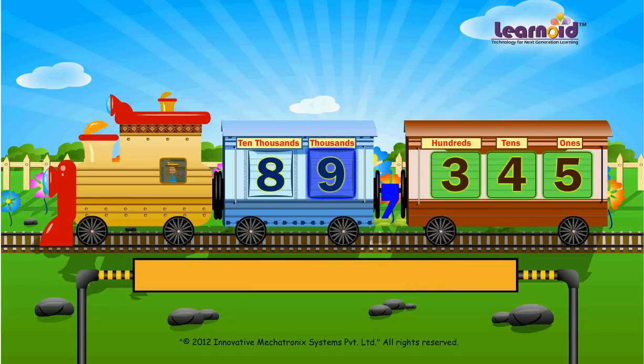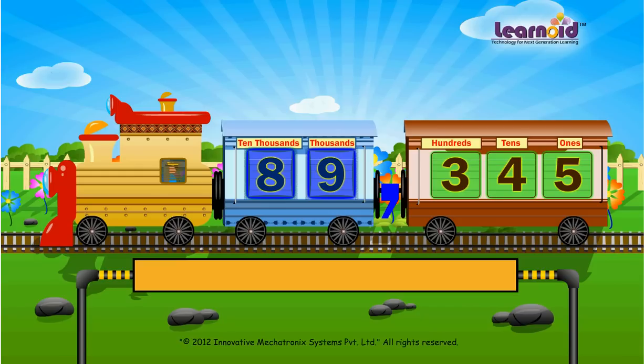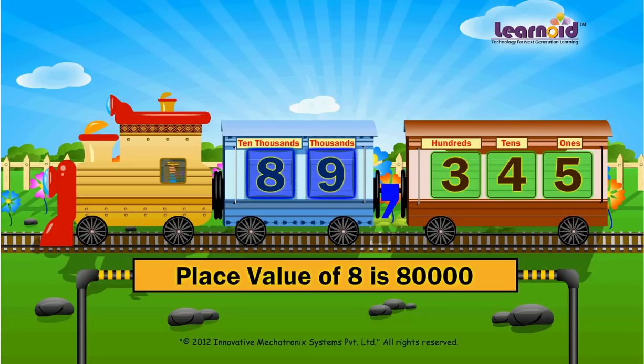Number 9 is in the 1,000's window. Its place value is 9,000. Number 8 is in the 10,000's window. Its place value is 80,000.